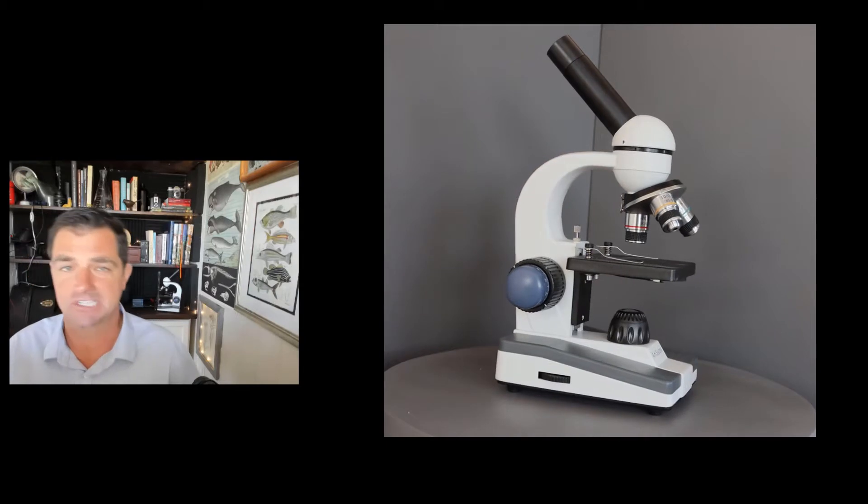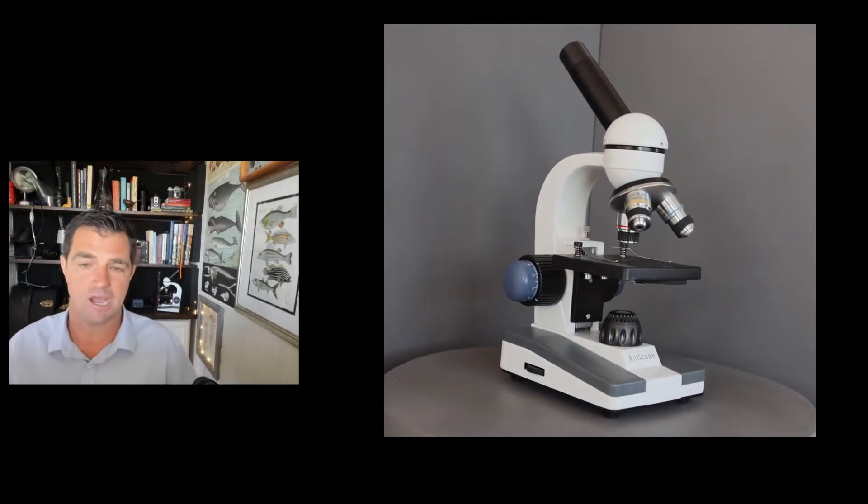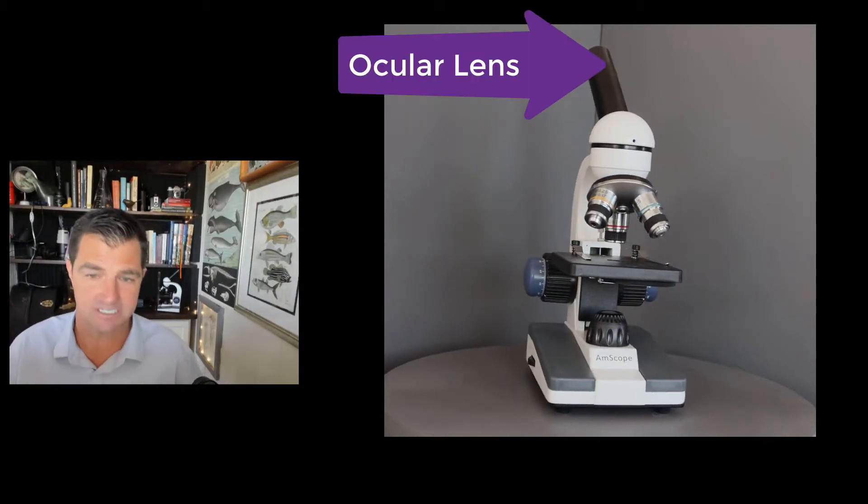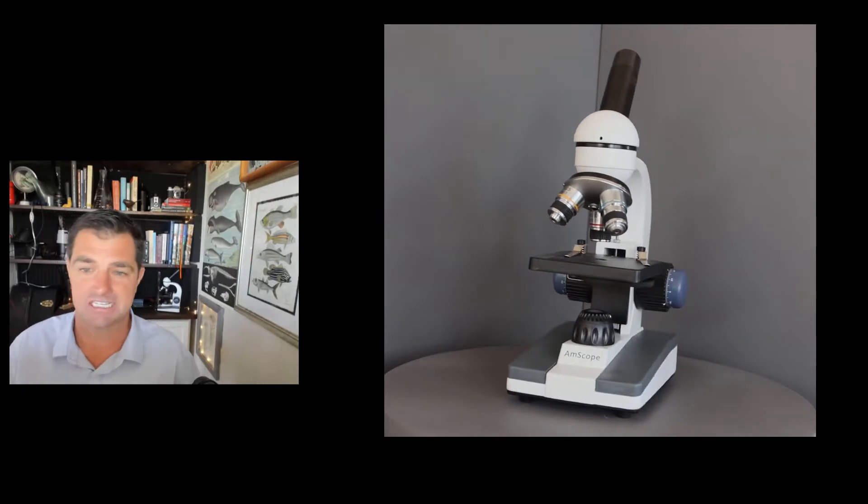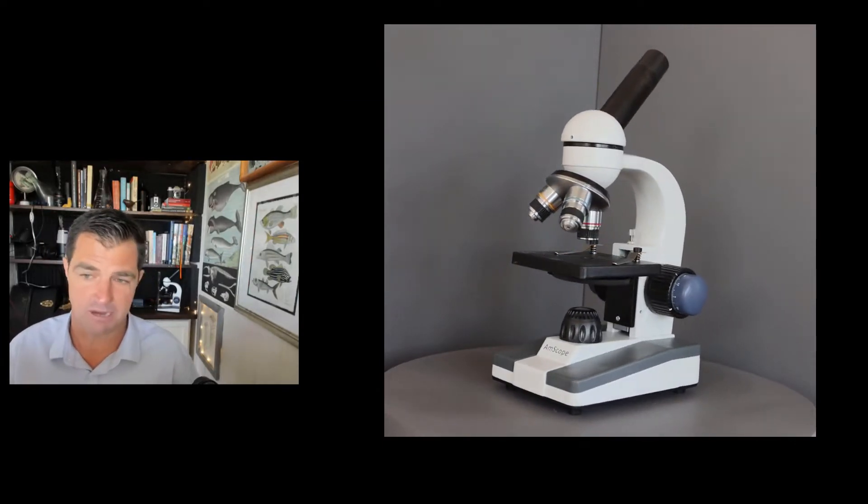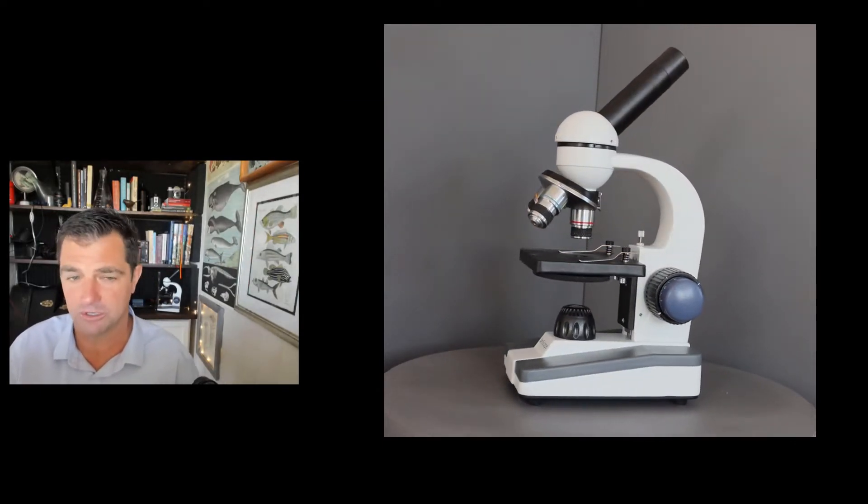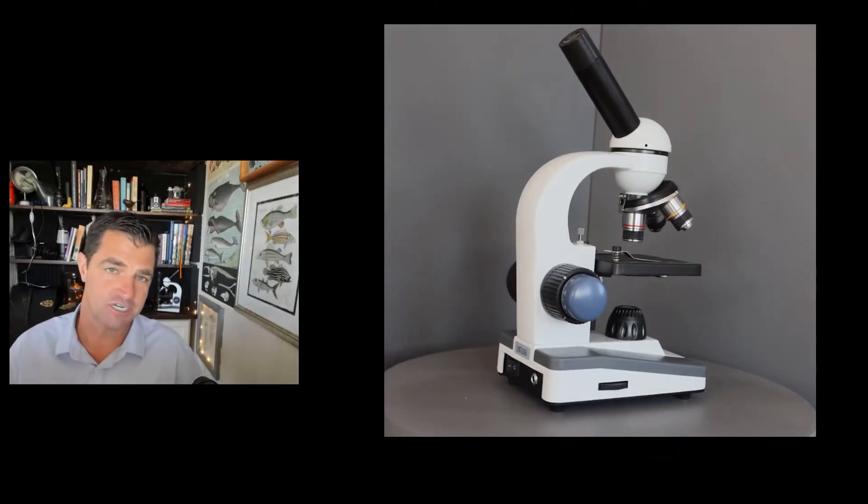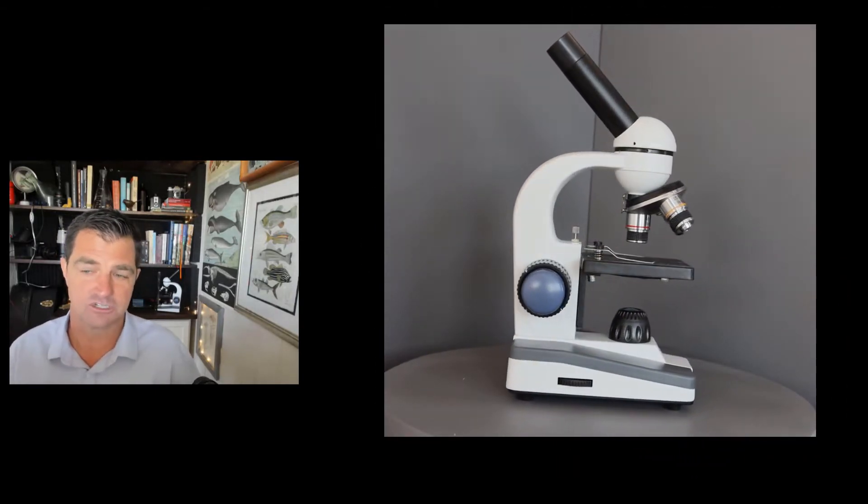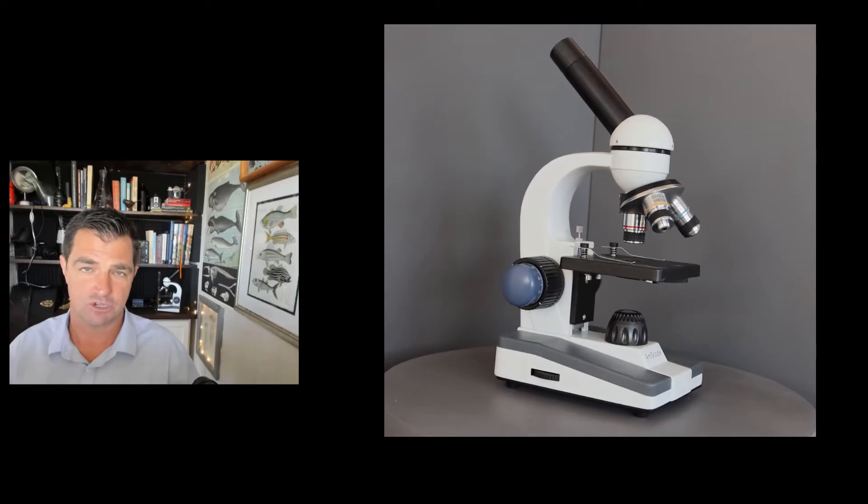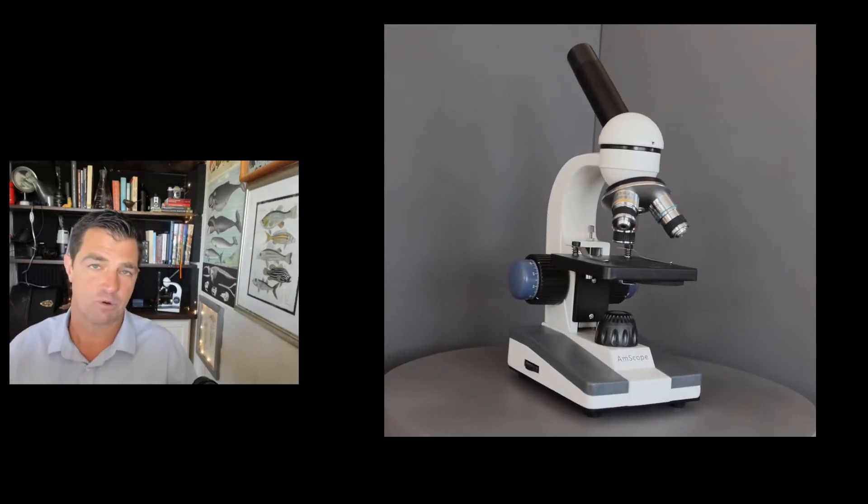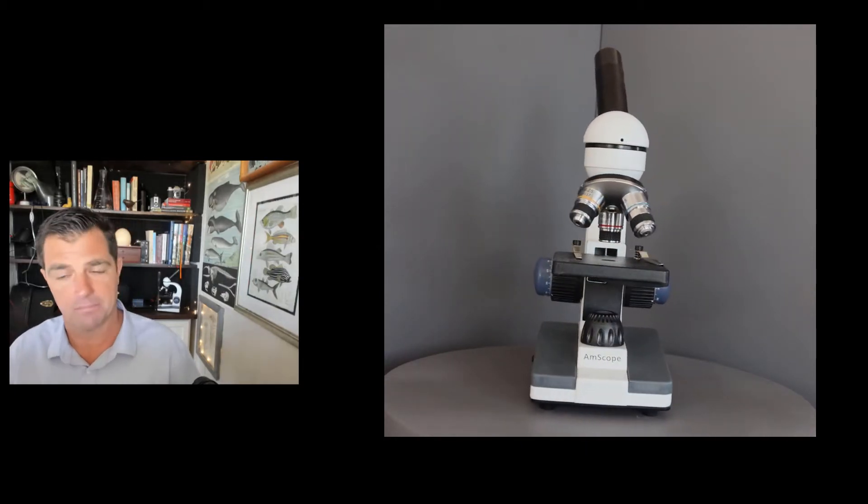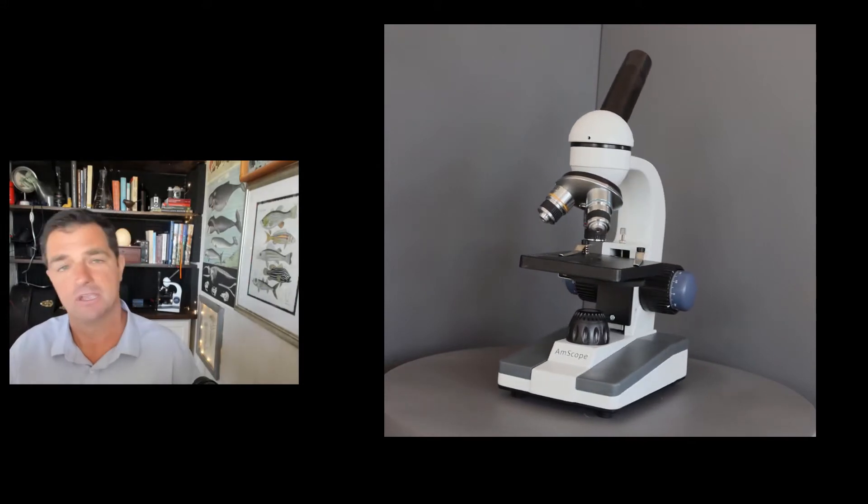So first, let's cover the basic parts of the microscope. First, we have the ocular lenses. In this case, this is the part you're going to look through. In this version, the M150, there's only one eyepiece that you look through at a time, so therefore we call it a monocular compound light microscope.